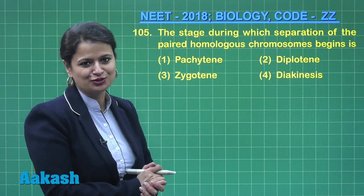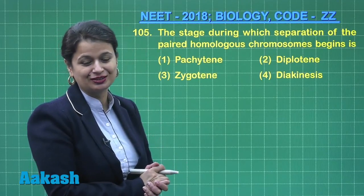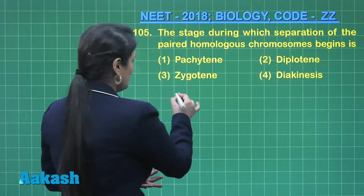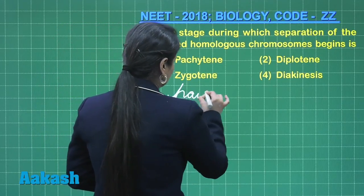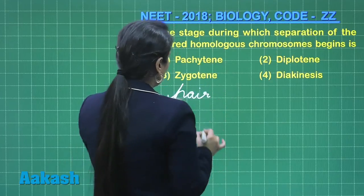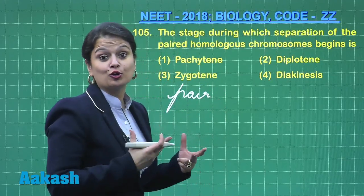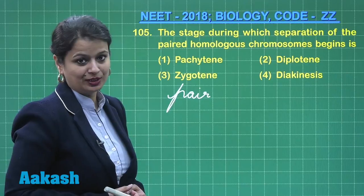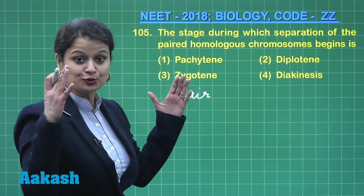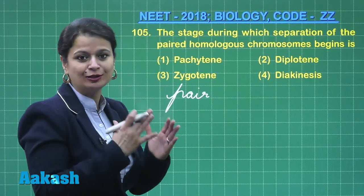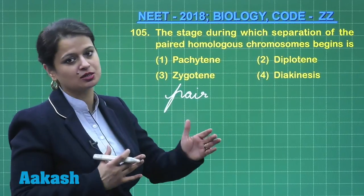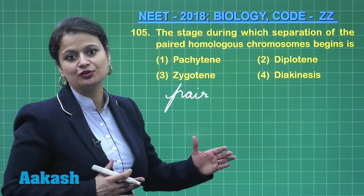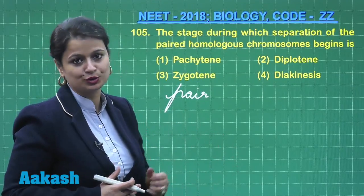In zygotene, pairing occurs. Now in the pachytene stage, crossing over occurs between the paired chromosomes. The chromosomes have come together and paired for the purpose of crossing over, which is the exchange of segments between homologous chromosomes.